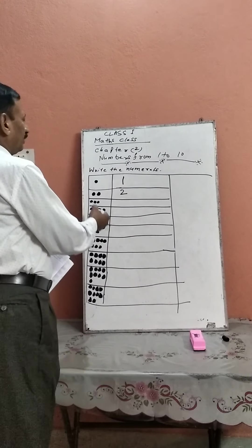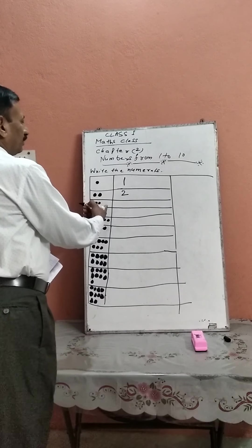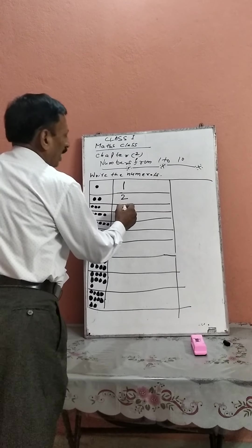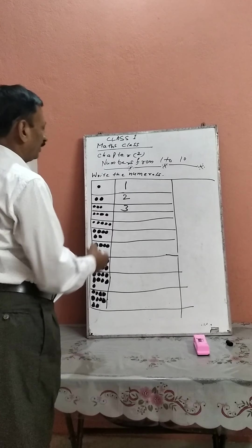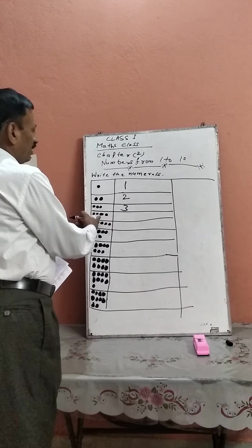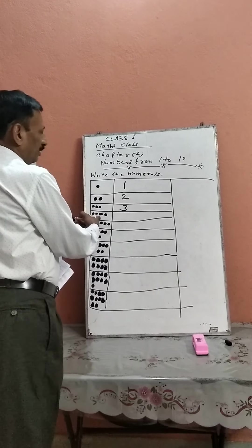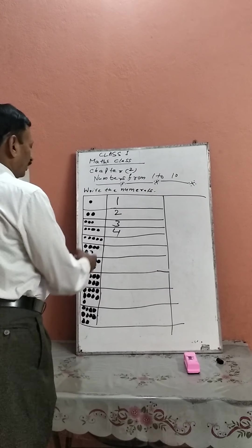Next, there are three objects in the box and you should write the number 3. Next, there are four objects in the box, therefore you should write number 4.